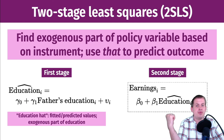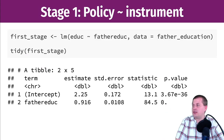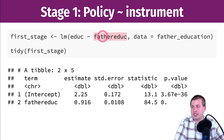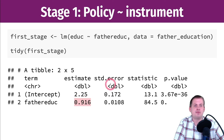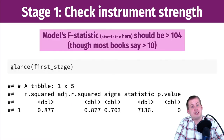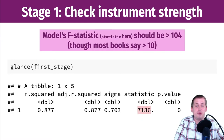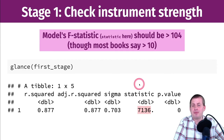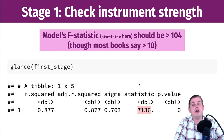In the code, you run a first-stage model predicting education from father's education. We already saw that if your father's education goes up one year, yours goes up by 0.9 years. We don't care so much about the details of that first stage — you can also check instrument strength by looking at the F-statistic, which should be a big number. Books still say greater than 10, but really it should just be large.